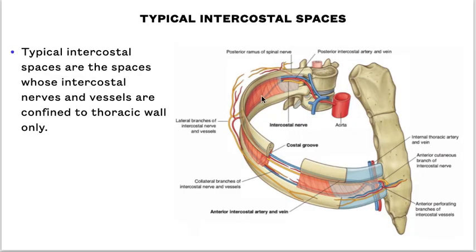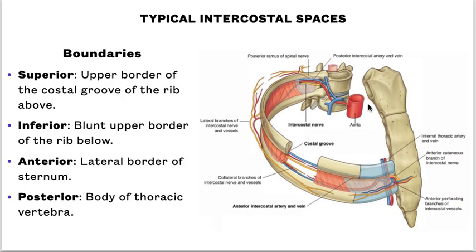A typical intercostal space: these are the spaces whose intercostal nerves and vessels are confined to the thoracic wall only. The boundaries of a typical intercostal space are superiorly the upper border of the costal groove of the rib above, inferiorly the blunt upper border of the rib below, anteriorly the lateral border of the sternum, and posteriorly the body of the thoracic vertebra.